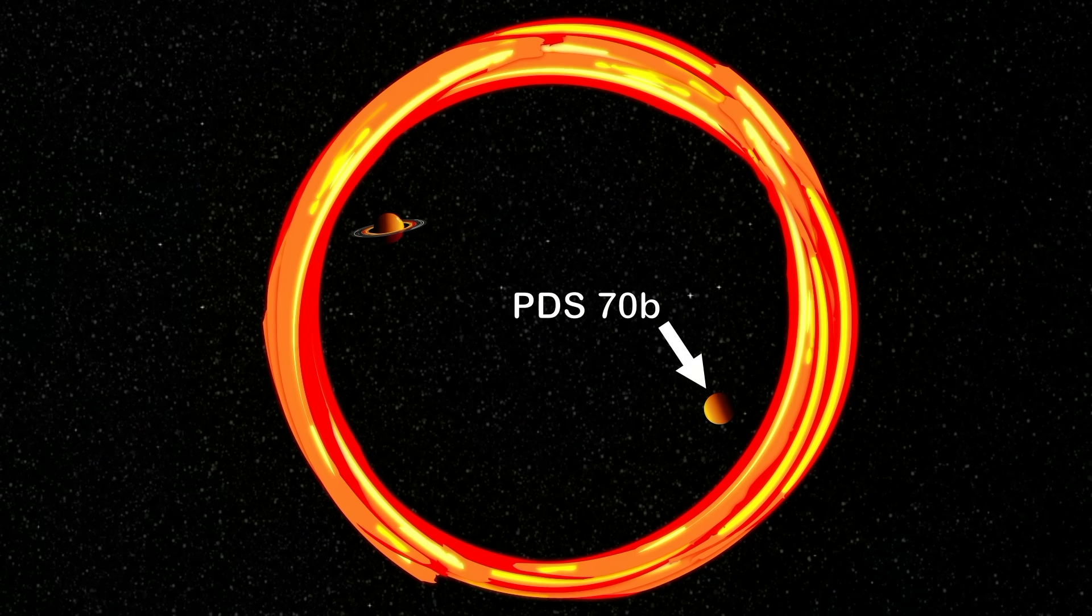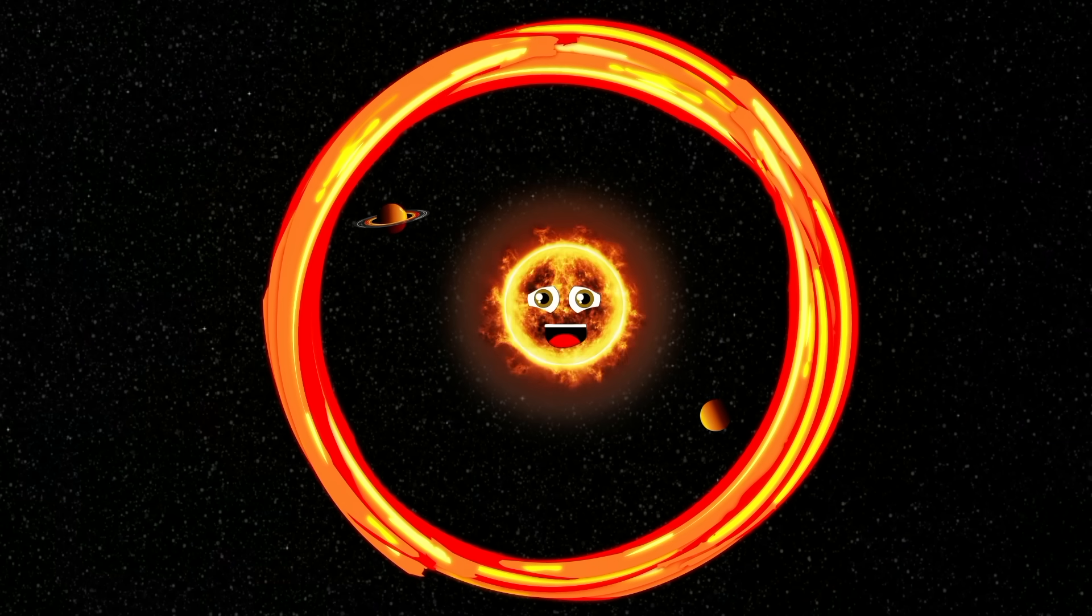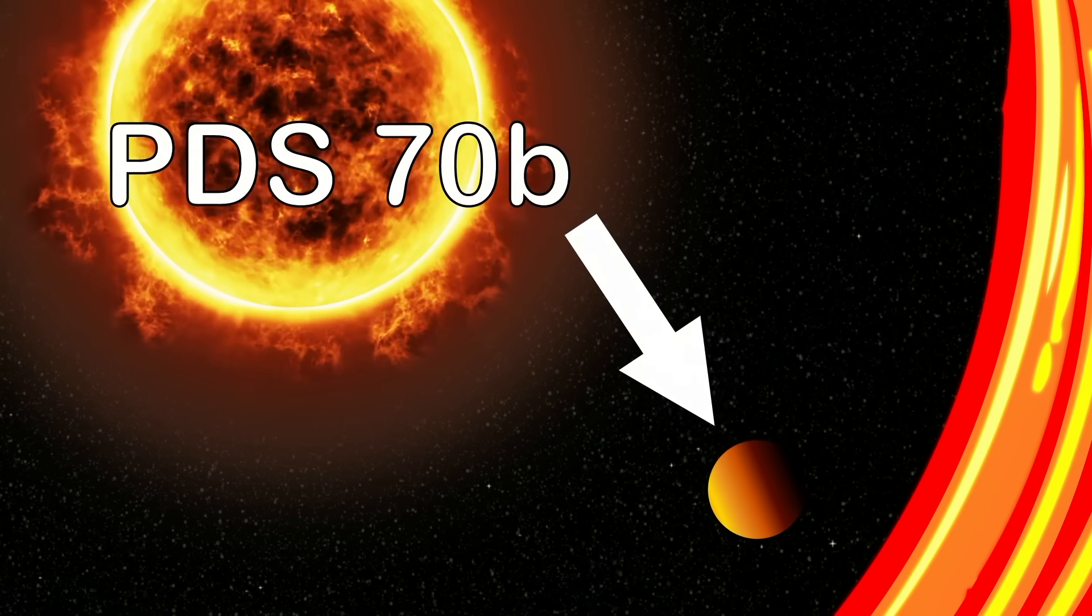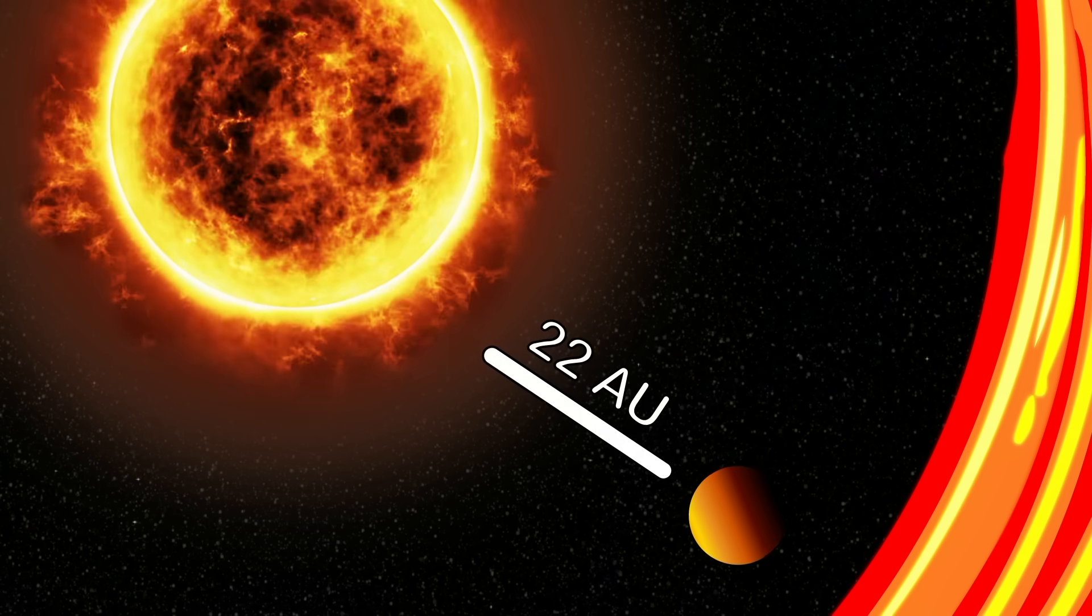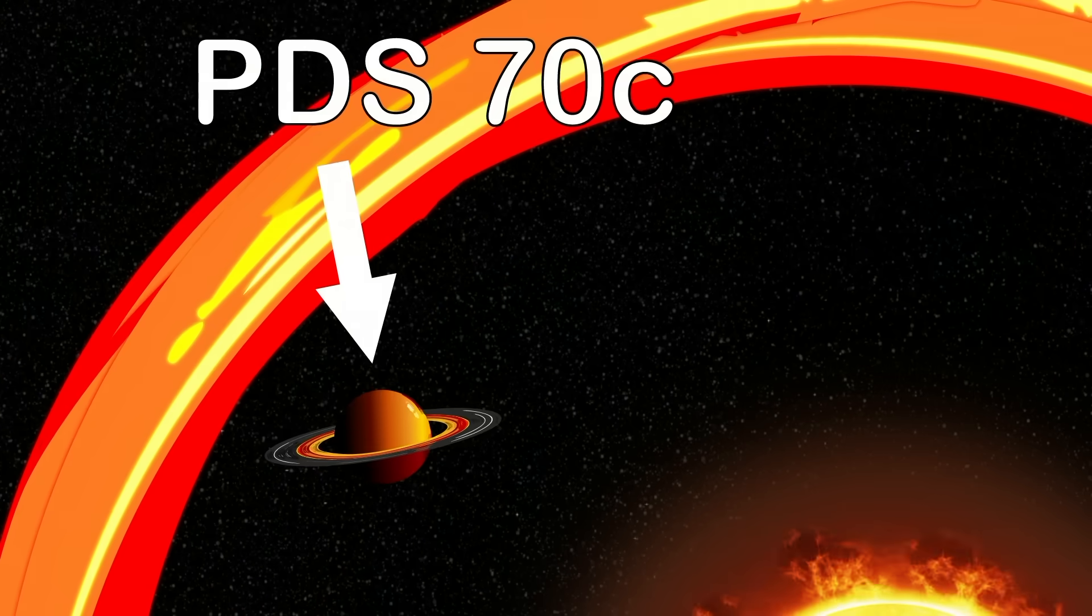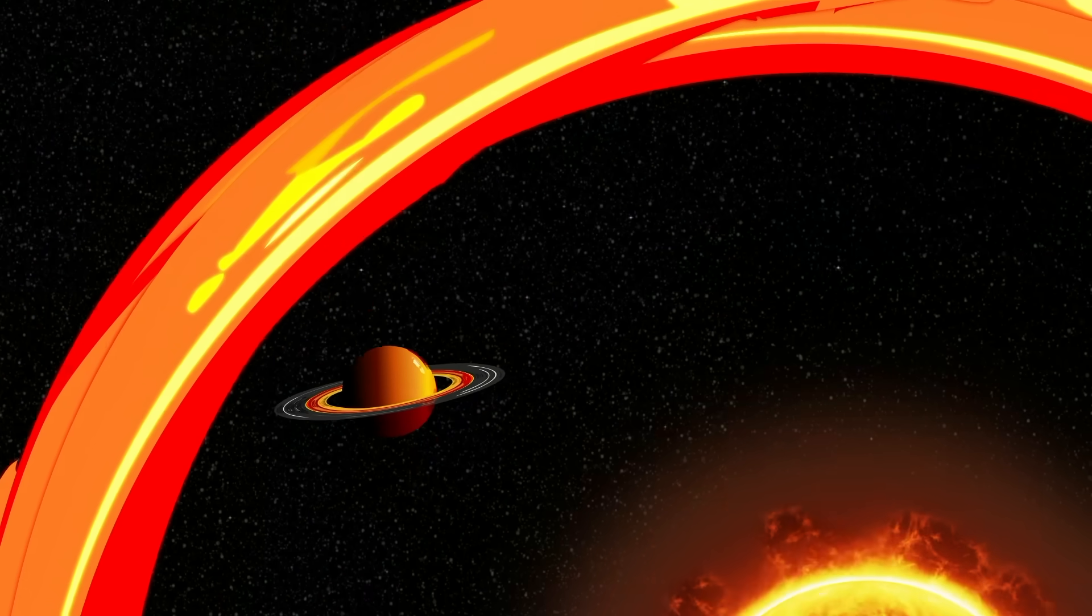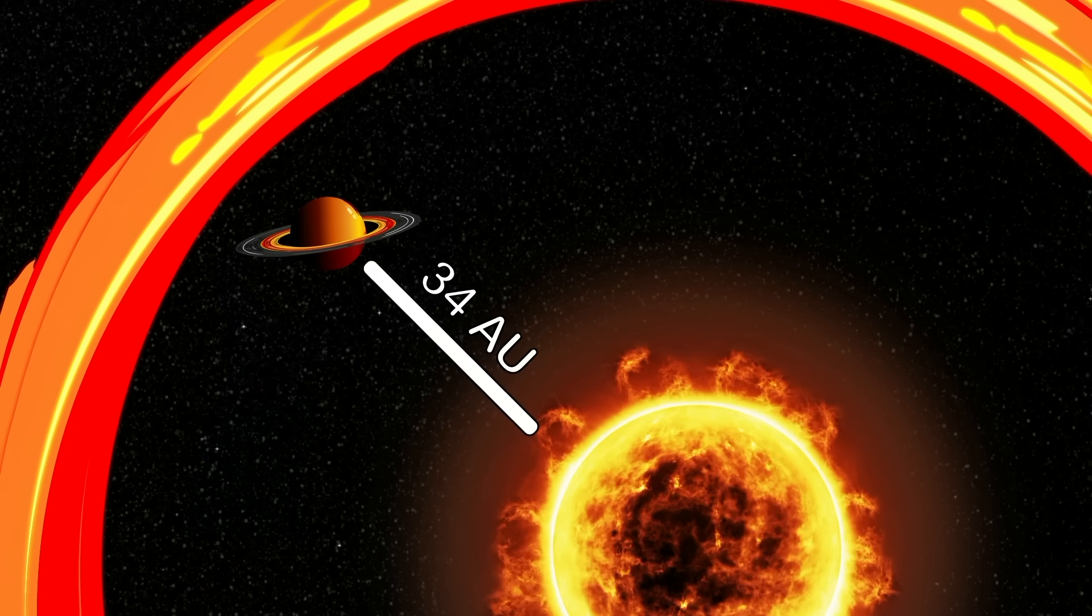PDS-70b and PDS-70c are two of my confirmed planets that orbit me. PDS-70b was discovered in 2018, 22 AU from its star, that is me. PDS-70c was discovered in 2019, located about 34 AU orbiting me on the scene.